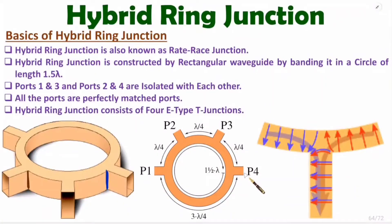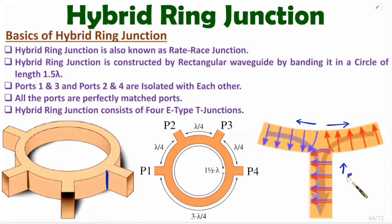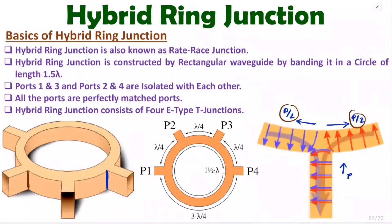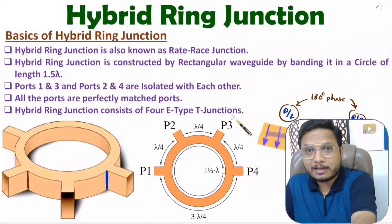With E-type T junction, if you insert a signal, it is equally bisected into two wings. If we have power P being inserted, ideally power in each wing will be P by 2. However, there is a 180-degree phase shift between the two signals in an E-type T junction.